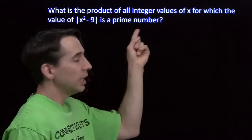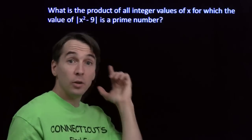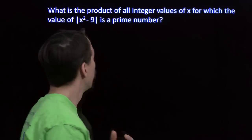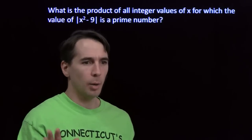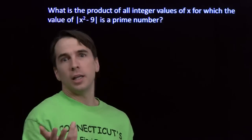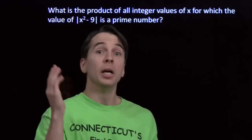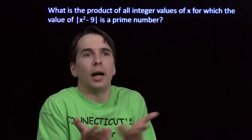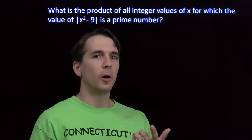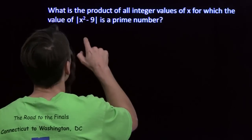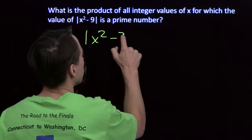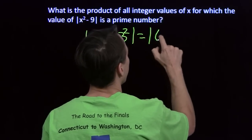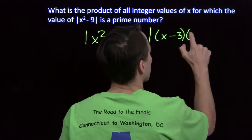Let's check out a couple more problems. Here we're looking for the product of all integer values of x for which the absolute value of x squared minus 9 is a prime number. One way to start is to throw in values of x: 0 squared minus 9 is negative 9, absolute value is 9 — not prime. 1 squared minus 9 is negative 8, absolute value is 8 — not prime. This is ridiculous; not only will that take forever, but how do you know when you've found them all? We have to do something smarter. We see that x squared minus 9 is a difference of squares — it's x squared minus 3 squared — so we can factor it as (x minus 3) times (x plus 3).